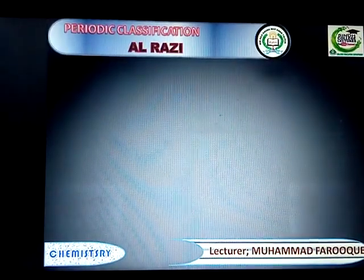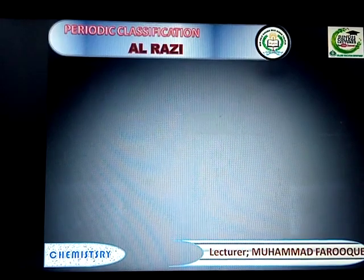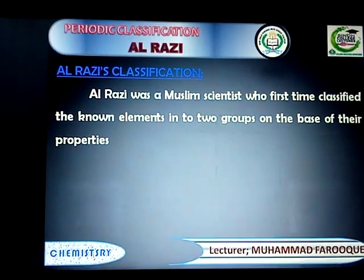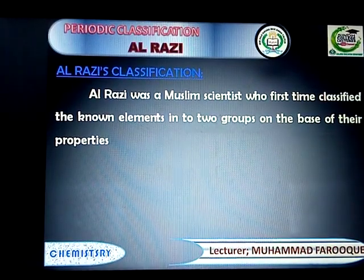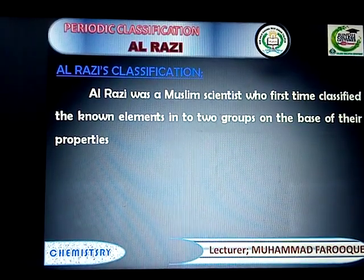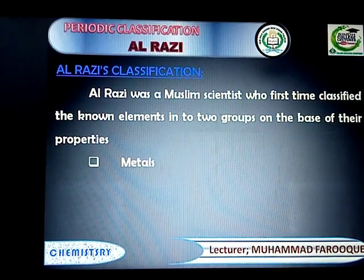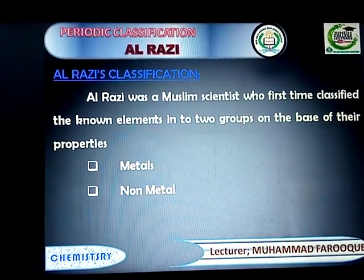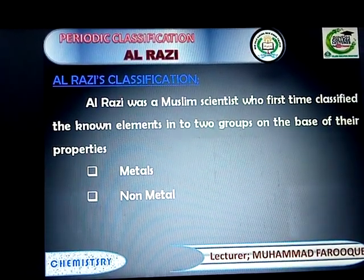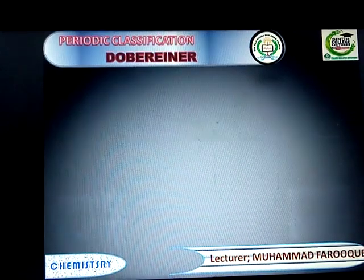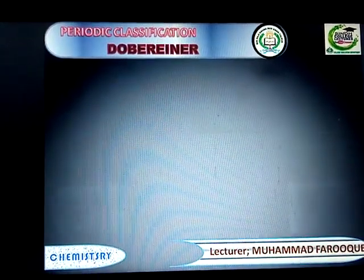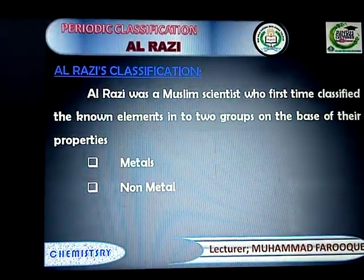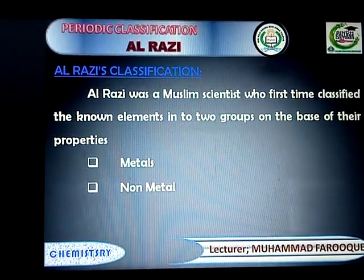Now we will discuss the work of each scientist. Number one: Al-Razi. Al-Razi was a Muslim scientist who for the first time classified elements on the basis of their properties into groups. These groups were metals and non-metals, and he also explained the properties of metals and non-metals. This classification was not very good because too much information about the properties of elements was not yet available.